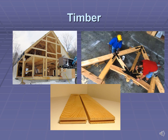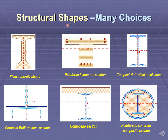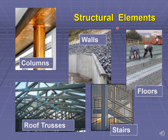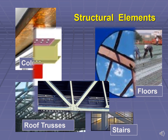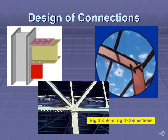Timber is another material used in some structures designed by civil engineers. The structural engineer can choose various structural shapes — from I-sections to composite sections, wherein circular sections are combined with various shapes like I-sections. The structural engineer designs different types of structural elements: columns, walls, floors or slabs, roof trusses, and stairs. Design of connections is an important part in the design of structural members and structures, using rigid and semi-rigid types of connections.